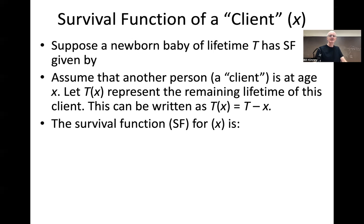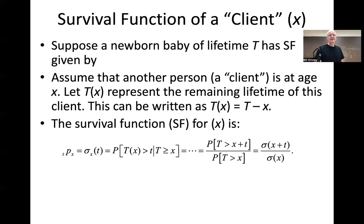What's the survival function for this client X? Any intuition about how we should figure out the survival function for the remaining lifetime random variable T of X? I'm thinking of an idea from chapter two whose initials are CP — and that doesn't stand for class participation. Conditional probability. The notation you see on the left — pre-subscript T, P subscript X — is the most common notation in actuarial science. TPX is called the conditional survival function for a client age X.